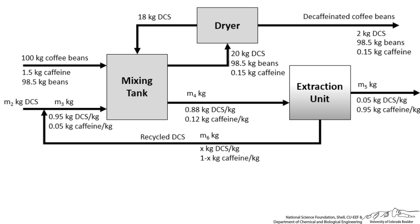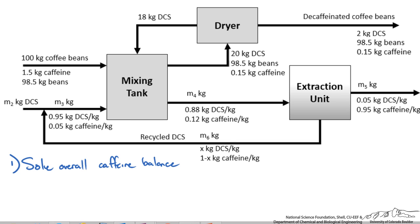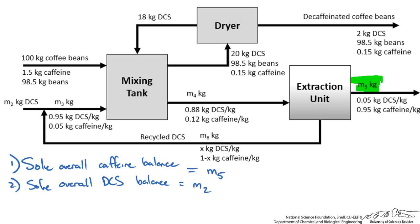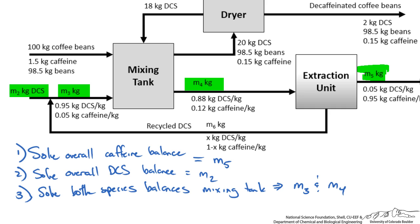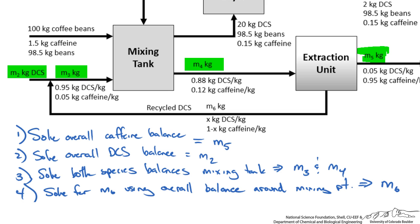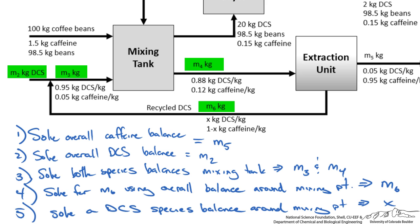Our plan is: first, solve the overall caffeine balance to get M5; second, solve the overall DCS balance to get M2, telling us how much solvent is needed per 100 kg of beans; third, solve both species balances simultaneously around the mixing tank to get M3 and M4; fourth, solve an overall balance around the mixing point to get M6; and fifth, solve a DCS or caffeine species balance around the mixing point to get the composition mass fraction x.